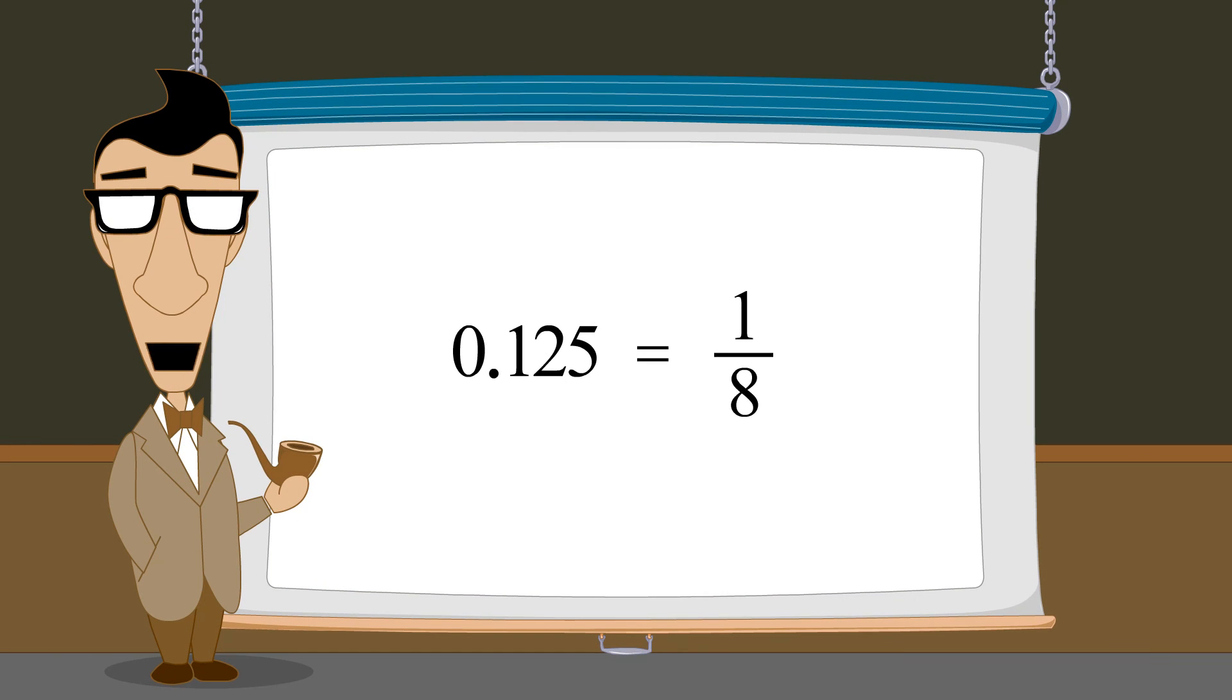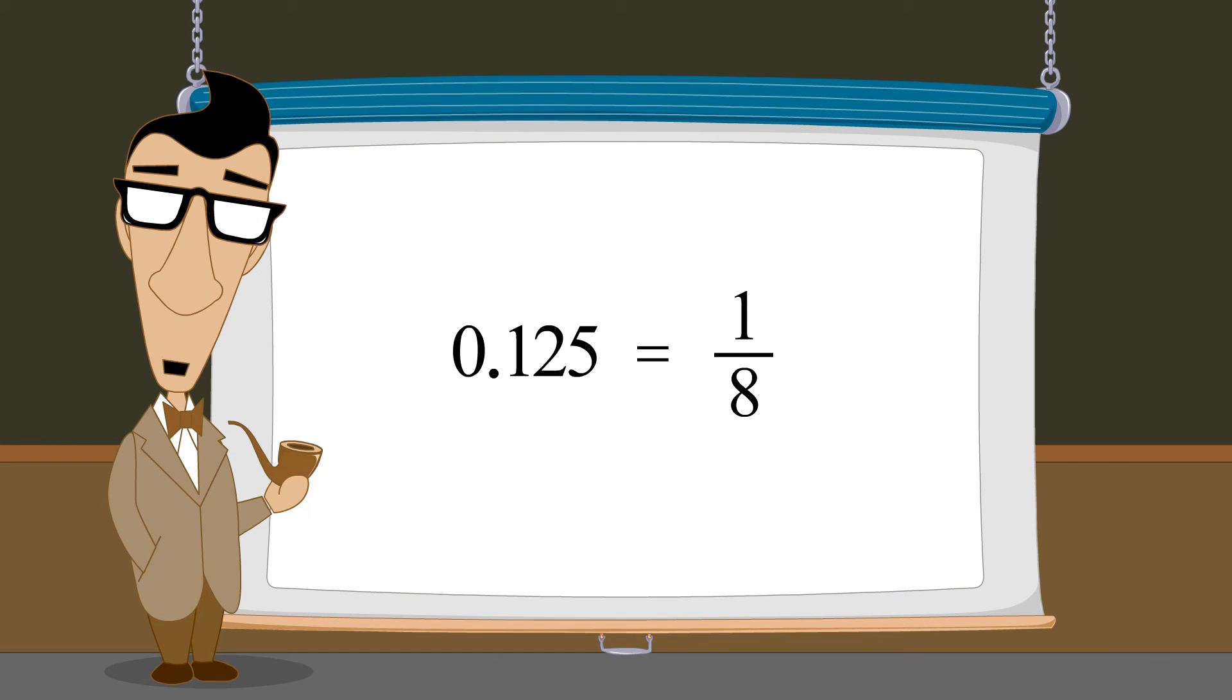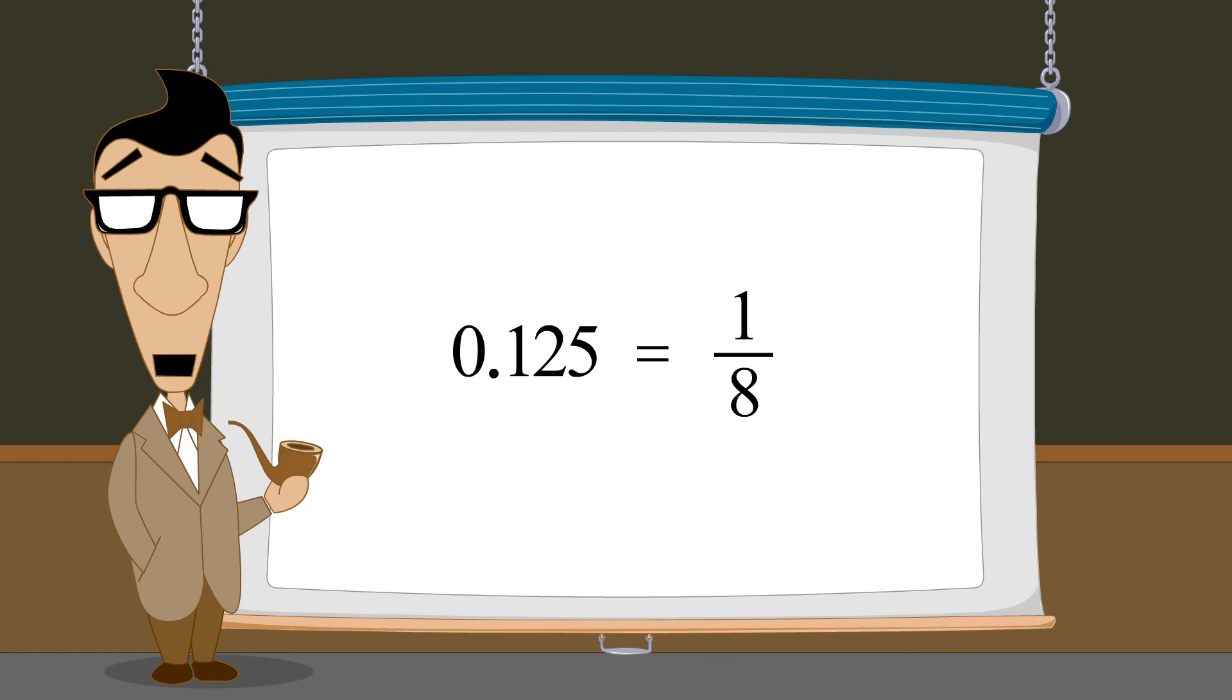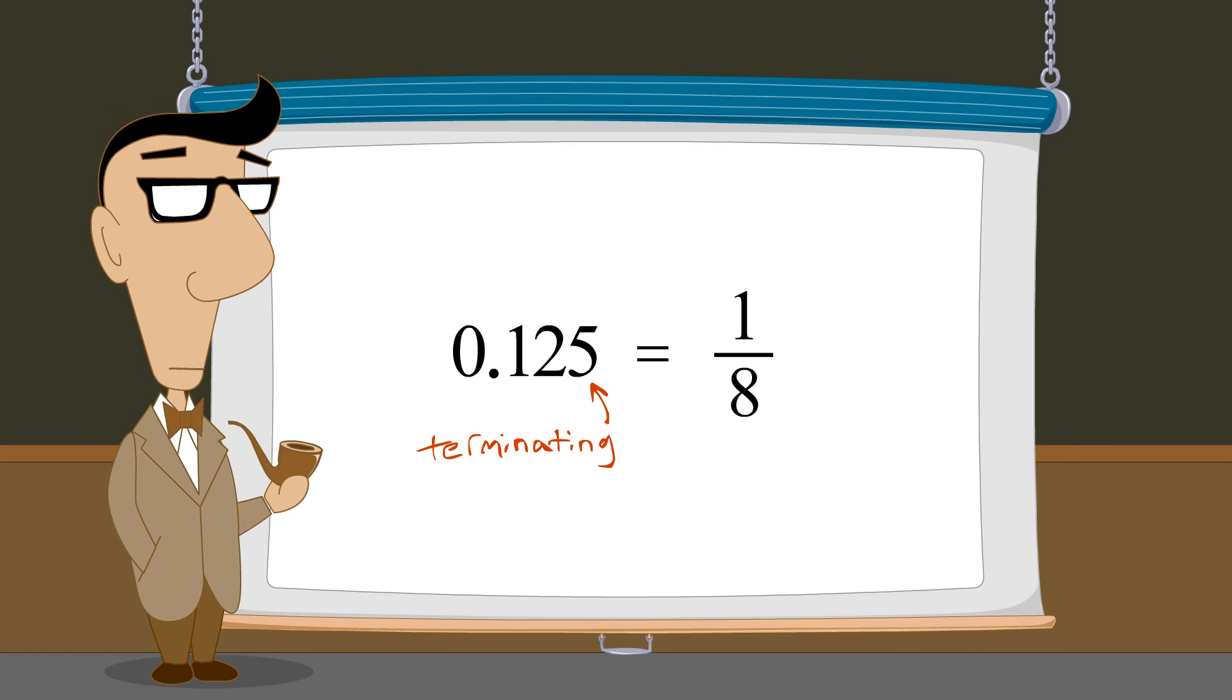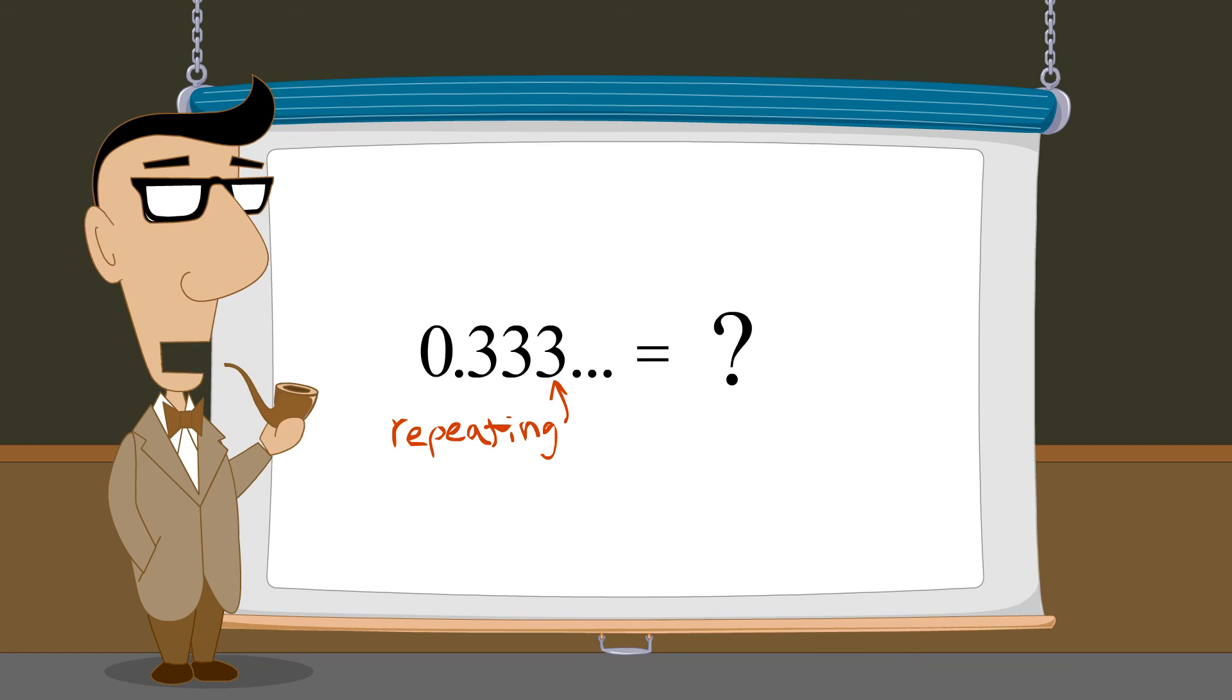So far, we have seen how to convert any decimal number with a finite number of digits to a fraction. In the next lecture, we will see how to convert any decimal number with infinitely repeating digits to a fraction. We'll see you later.